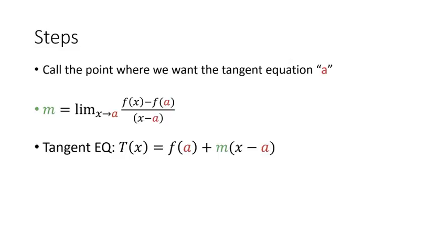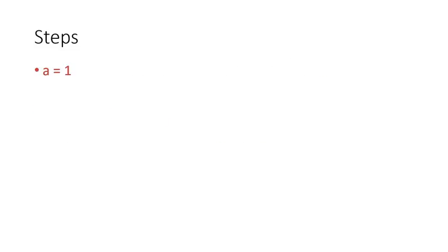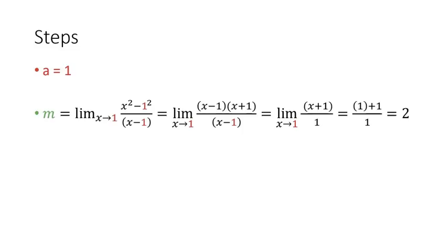So let's look at the example. Finding the tangent equation for x squared at x equals 1. a equals 1. m is going to be the limit of our function x squared minus that function at 1, which is 1 squared, all over x minus 1.